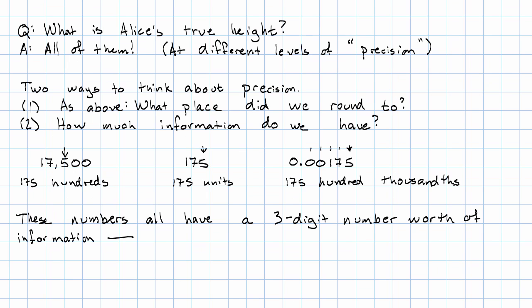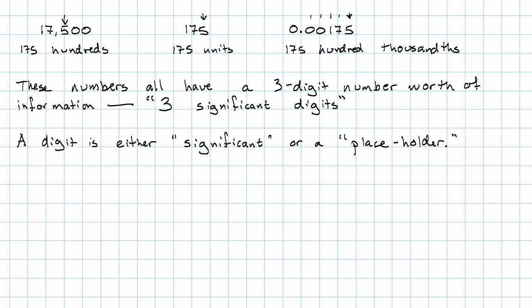The way we describe that is by saying they have three significant digits. It means that three of the digits in the number are significant, as opposed to being placeholders. The zeros in 17,500 that just tell us we have hundreds, or the zeros in 0.00175 that tell us we have hundred-thousandths — those are just placeholders.